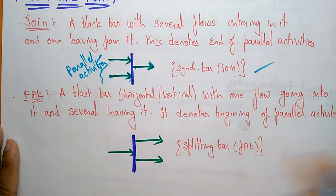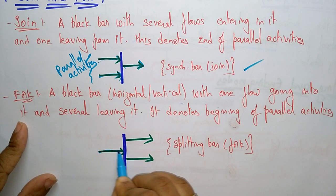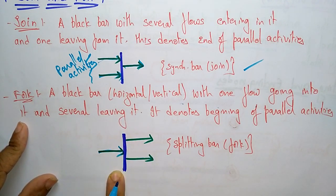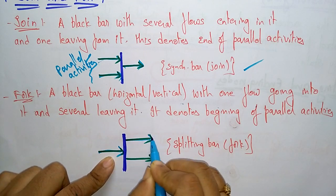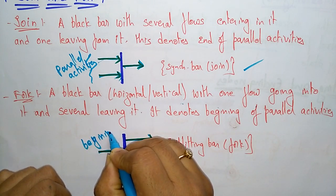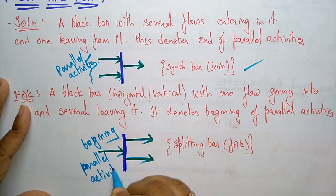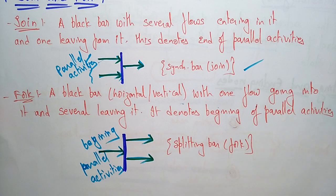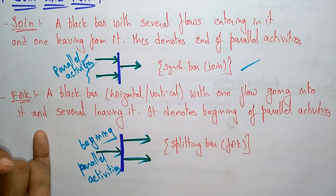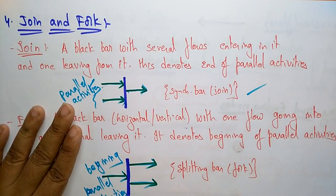A fork is just the reverse of a join — a black bar, horizontal or vertical, with one flow going into it and several leaving out. It denotes the beginning of parallel activities, splitting one activity into several. Whenever you need to do simultaneous work you can use a fork, and if you want to combine the work you use a join. With a join, parallel activities are ending; with a fork, parallel activities are beginning.